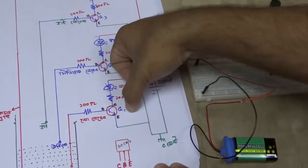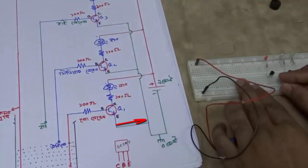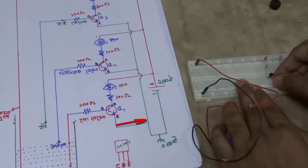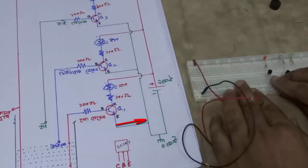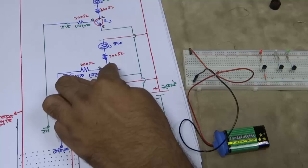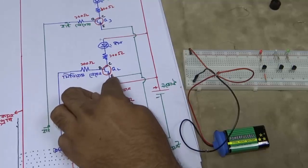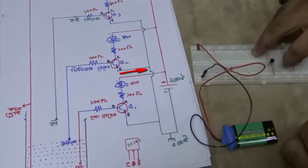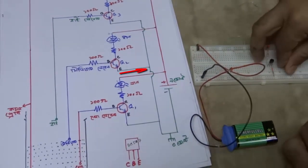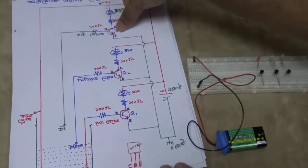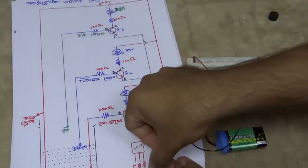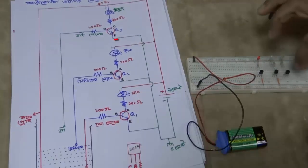The 3rd pin of the transistor is ground. When the transistor emitter connects, pin 3 goes to ground. The transistor's 3rd pin and emitter are both connected to ground.